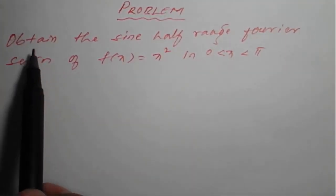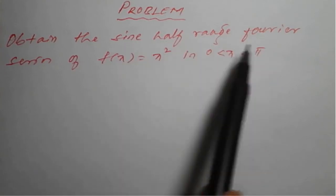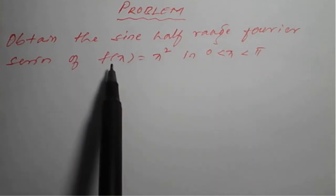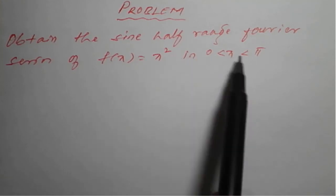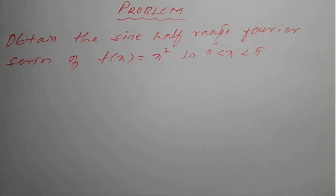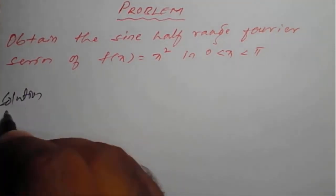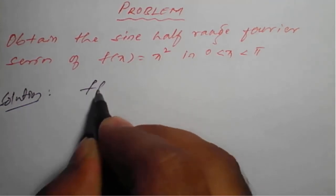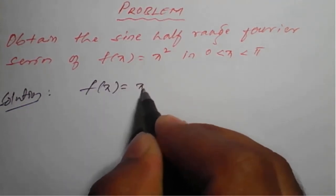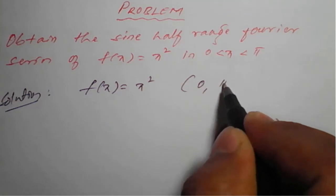The problem is to obtain the sine half range Fourier series of the function f(x) = x², where x is greater than 0 and less than pi. The given function is f(x) = x² in the interval (0, pi).